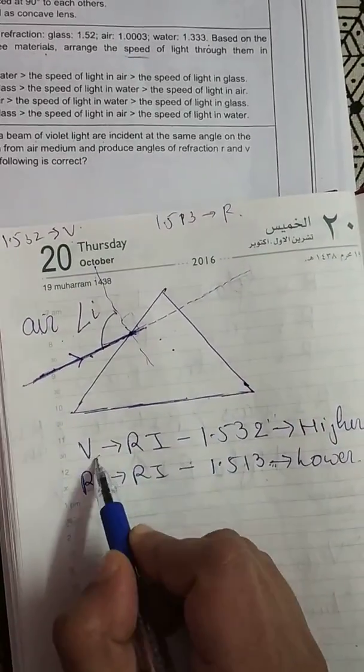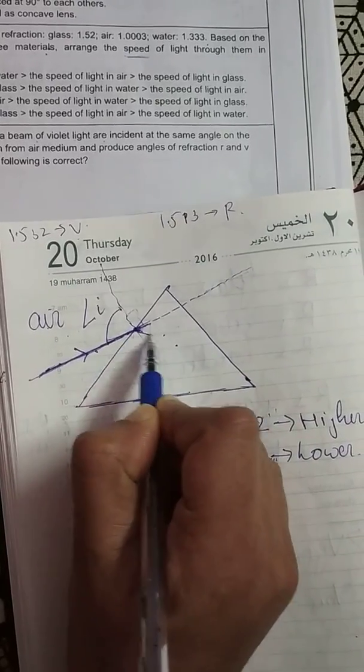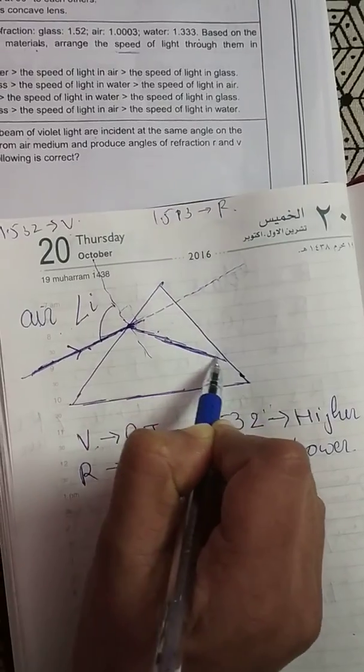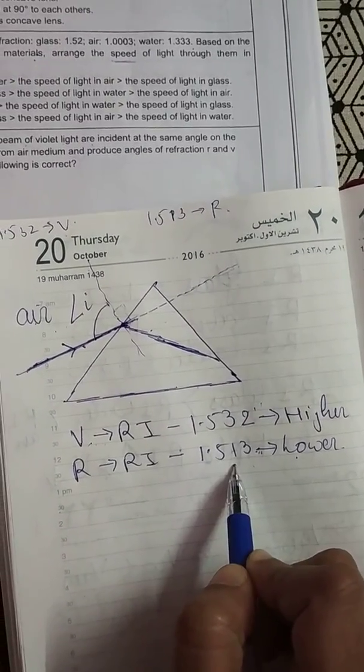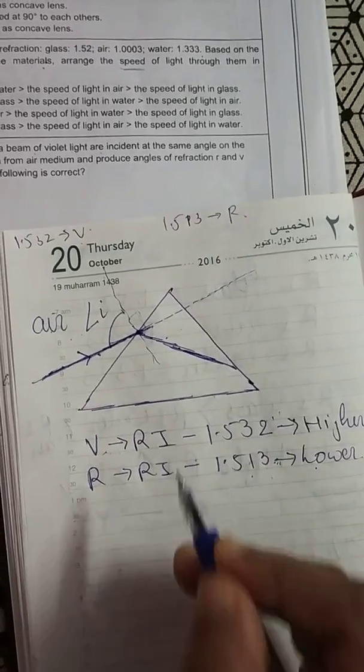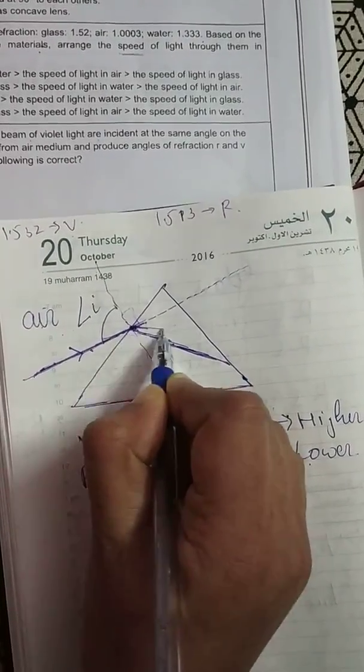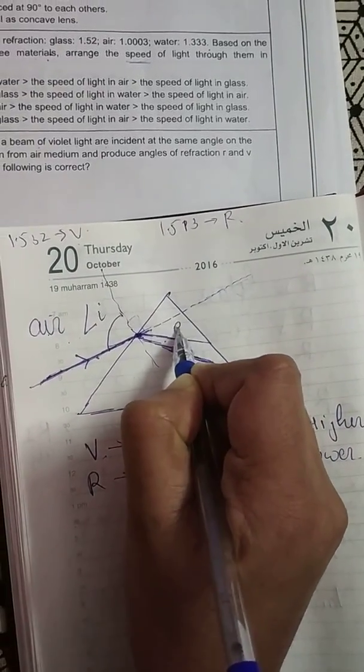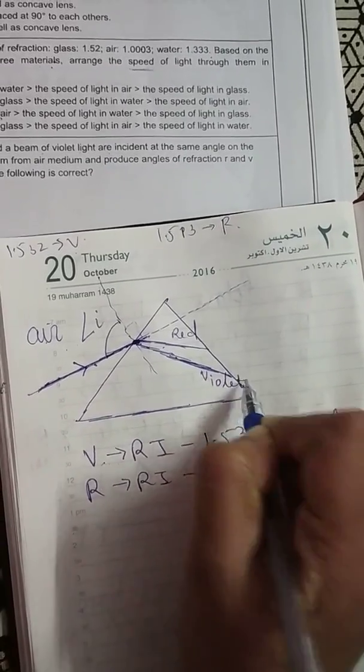So, in this, violet will bend more towards the normal. Look, violet will bend more towards the normal, correct? And what about red? Red has lower refractive index as compared to violet. So, it will not bend more, but it will bend less towards the normal. This is red and this is violet, correct?